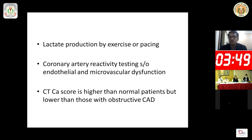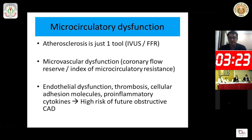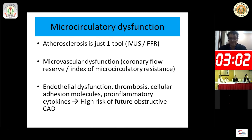On CT, the calcium score in these patients is higher than normal patients with no obstructive vascular disease, but lower than patients with obstructive coronary artery disease. To understand microcirculatory dysfunction: atherosclerosis is one entity we can see and assess by fractional flow reserve and intravascular ultrasound. Microvascular dysfunction is another entity which needs to be assessed by coronary flow reserve and index of microcirculatory resistance. Endothelial dysfunction, thrombosis, cellular adhesion molecules, and pro-inflammatory cytokines are also involved. All these patients are at high risk of future obstructive coronary artery disease.